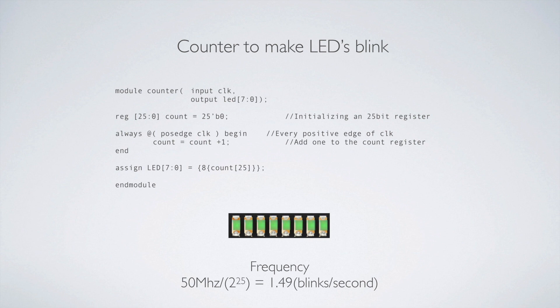What we wind up getting is all of these LEDs tied to that one thing. There are braces around, say, eight and then count[25] — what we're doing is actually taking and making eight of that one bit, which is count at the 25th bit. So we're not multiplying it by eight, but we're making eight of them. We're going to fill in LED[7:0] with eight bits of count[25]. That's what the braces do — they give you a multiple of the same thing. So if we look at the frequency, we take the clock frequency coming into the FPGA and divide by two to the 25, and we get 1.49 blinks per second — just a little bit more than one blink per second.